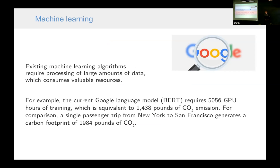But I would like to point out that there is a problem with this machine learning. The existing machine learning algorithm requires processing of very large amounts of data, which consumes valuable resources. For example, if we want to teach this Google language model, it requires about 5,000 hours of GPU time, which is equivalent to more than 1,000 pounds of CO2 emission. This is comparable to a single passenger trip from New York to San Francisco.